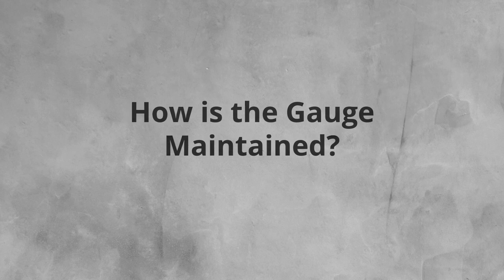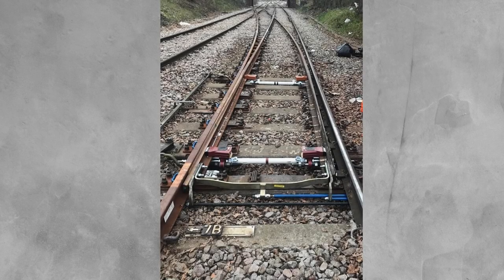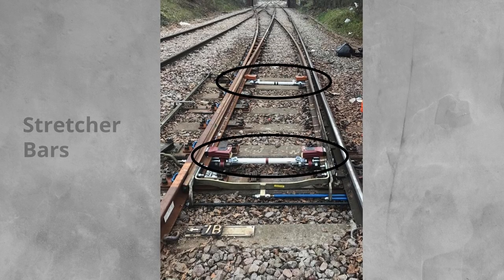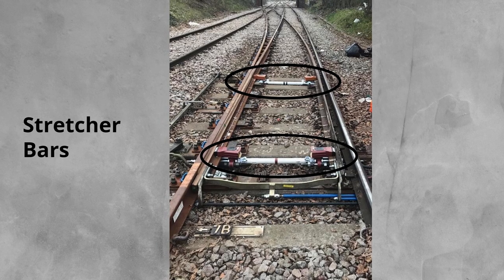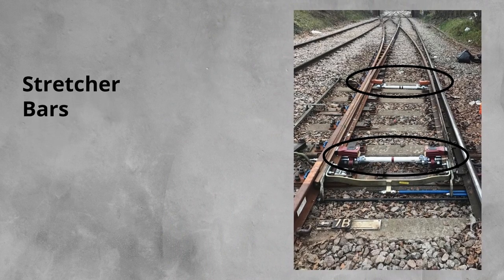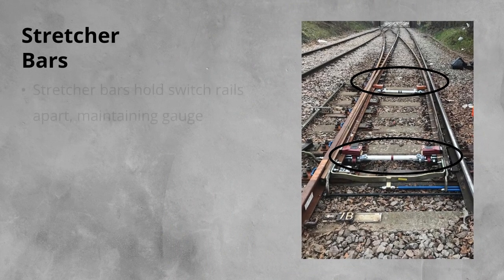Given that both switch rails are free, unlike the stock rails, how is the gauge maintained? The gauge is maintained through the use of stretcher bars. These hold the switch rails the correct distance apart and ensure that when the switches are swung, both switch rails move in tandem. The longer the switch, the more stretcher bars are required.